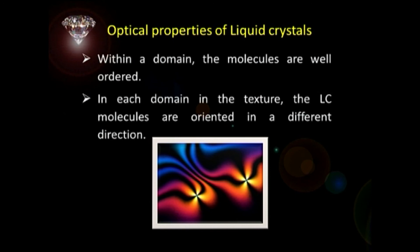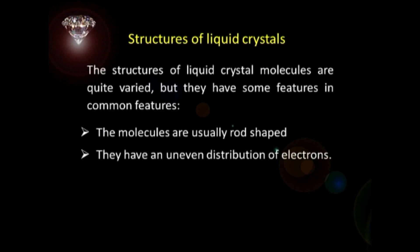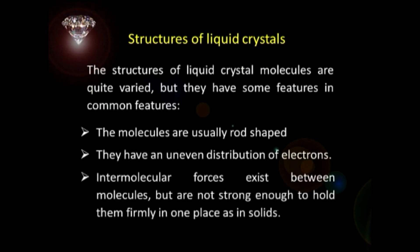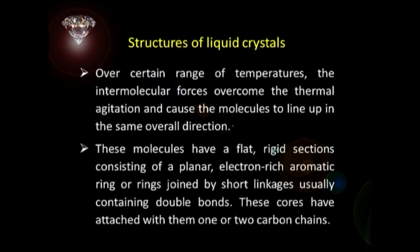That is why we get beautiful colored patterns in the photomicrographs taken using a polarizing microscope with hot stage. The structure of liquid crystal molecules are quite varied but have some common features. The molecules are usually rod-shaped and have an uneven distribution of electrons. Intermolecular forces exist between molecules but are not strong enough to hold them firmly in one place as in the case of solids. Over a certain range of temperatures, the intermolecular forces are able to overcome thermal agitation and cause molecules to line up in the same overall direction. These molecules have flat, rigid sections consisting of a planar electron-rich aromatic ring or rings joined by a short linkage, usually containing double bonds.